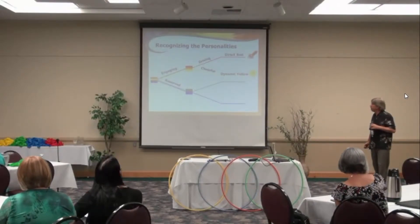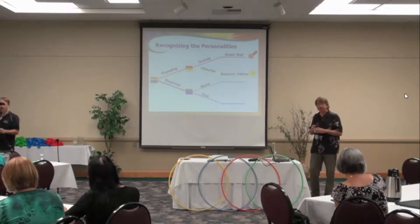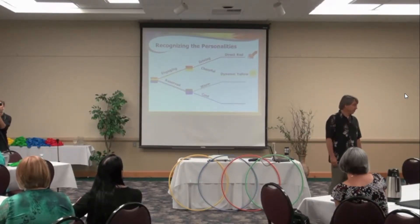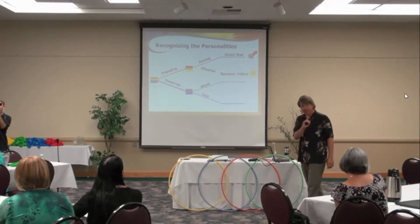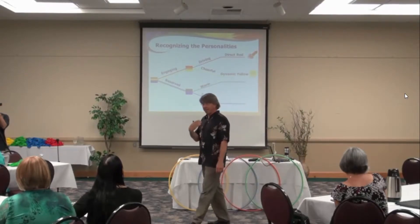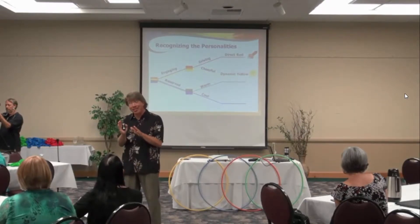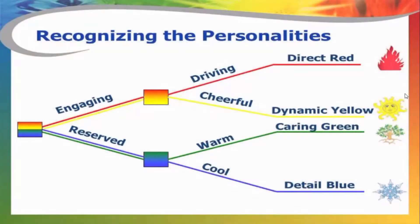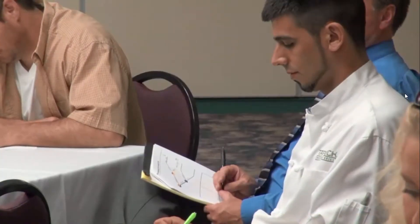On the reserved side, it takes one of two forms: either warm, caring, compassionate, or loving — or cool, analytical, precise, and logical. Reserved plus warm we call 'caring green,' represented by a tree with a heart root system. Reserved plus cool we call 'detailed blue,' represented by a really detailed snowflake. Before you do a self-assessment, we're going to introduce the different personality styles on the bottom of the page and talk about some of the words that go with them.